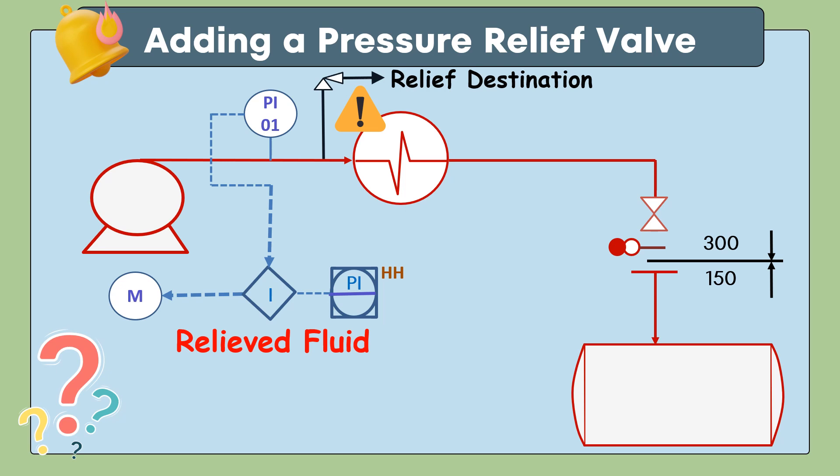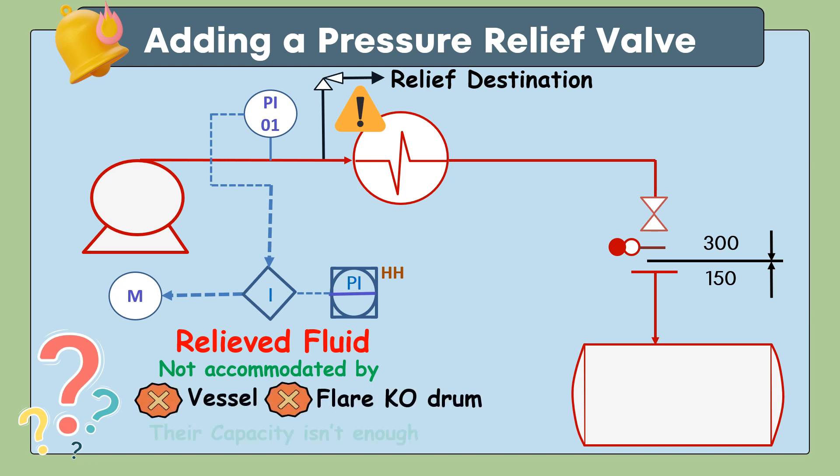The high flow rate from the relief valve could not be accommodated by the existing vessel or flare knockout drum, as neither was adequate for such capacity. This means we would need a new vessel to accommodate this load, which is too costly.